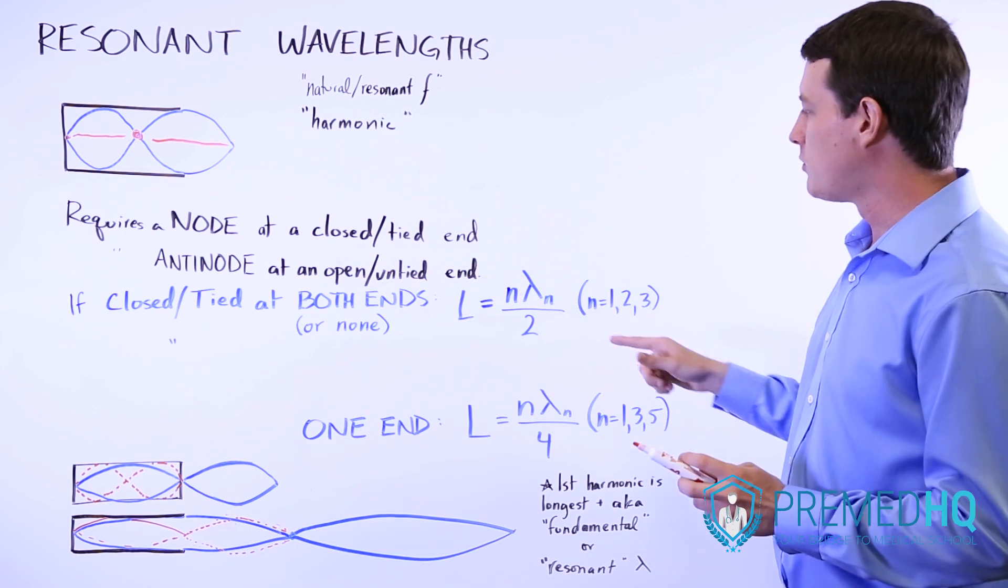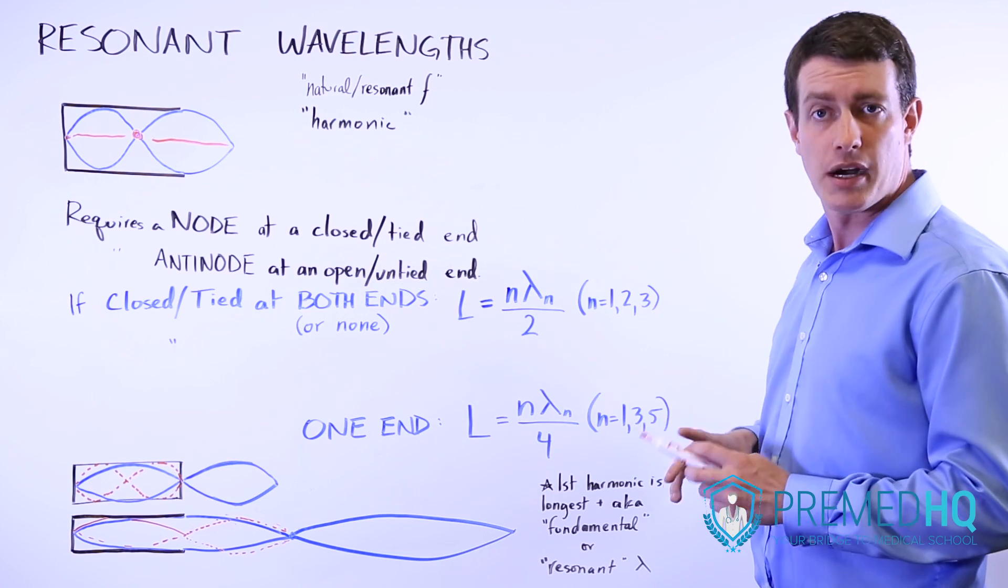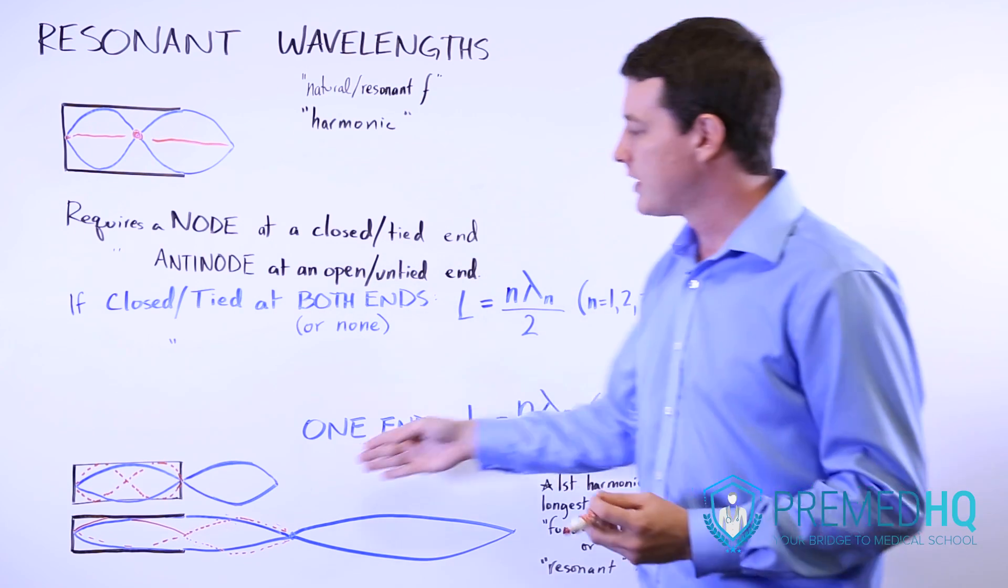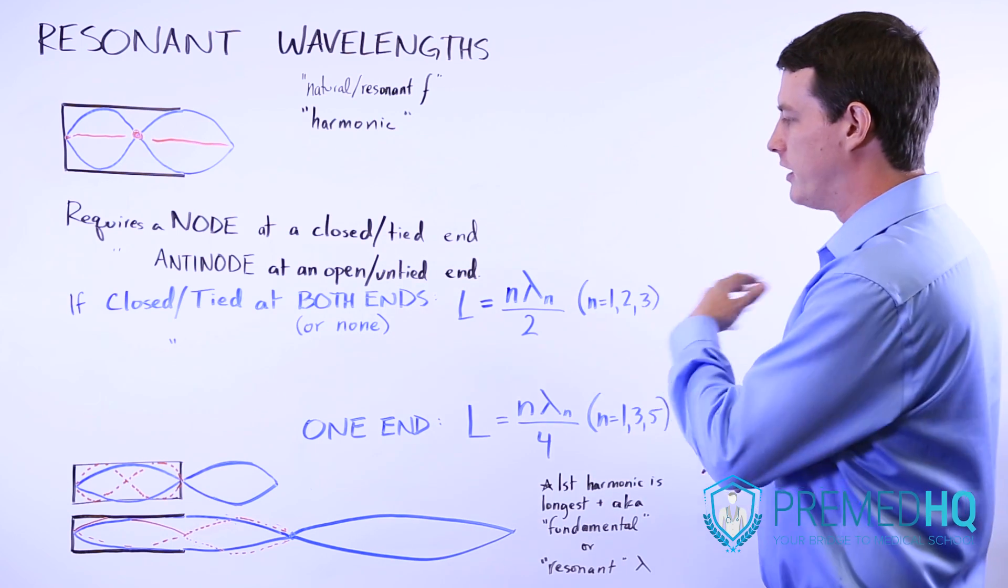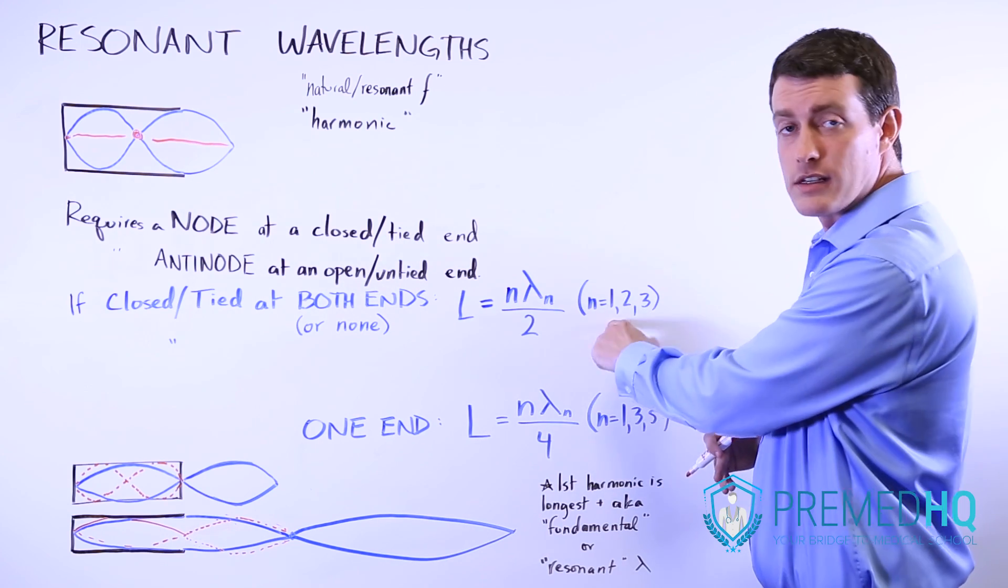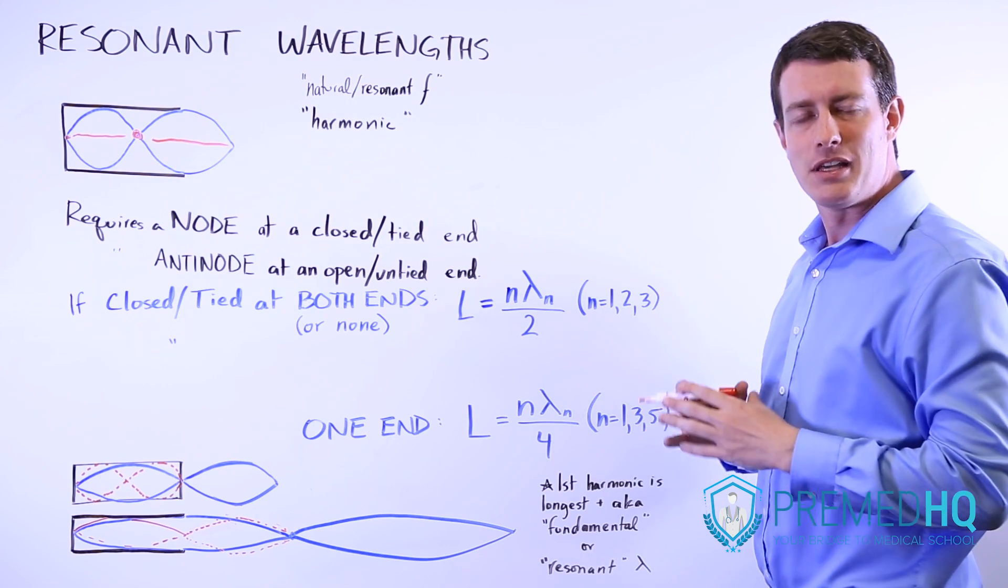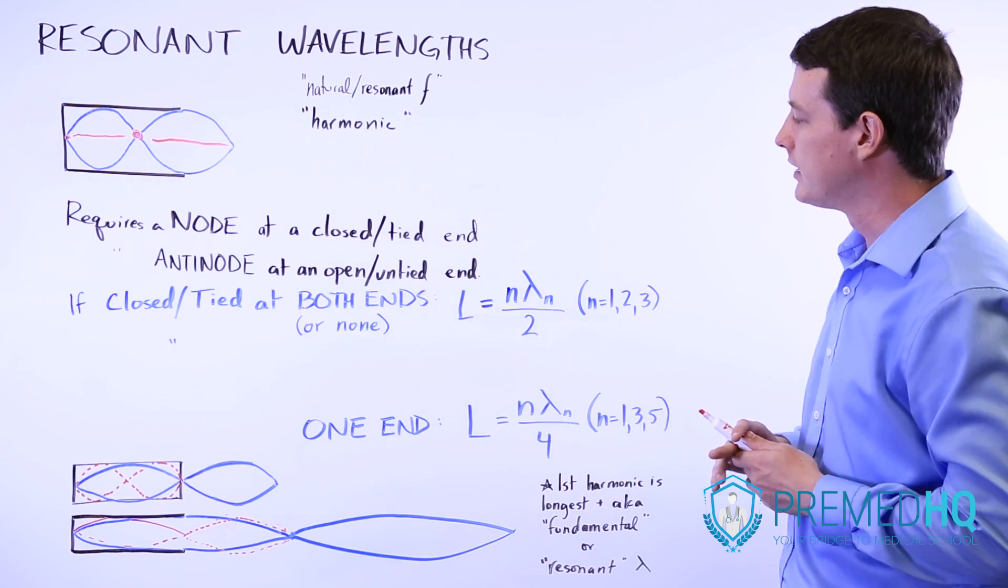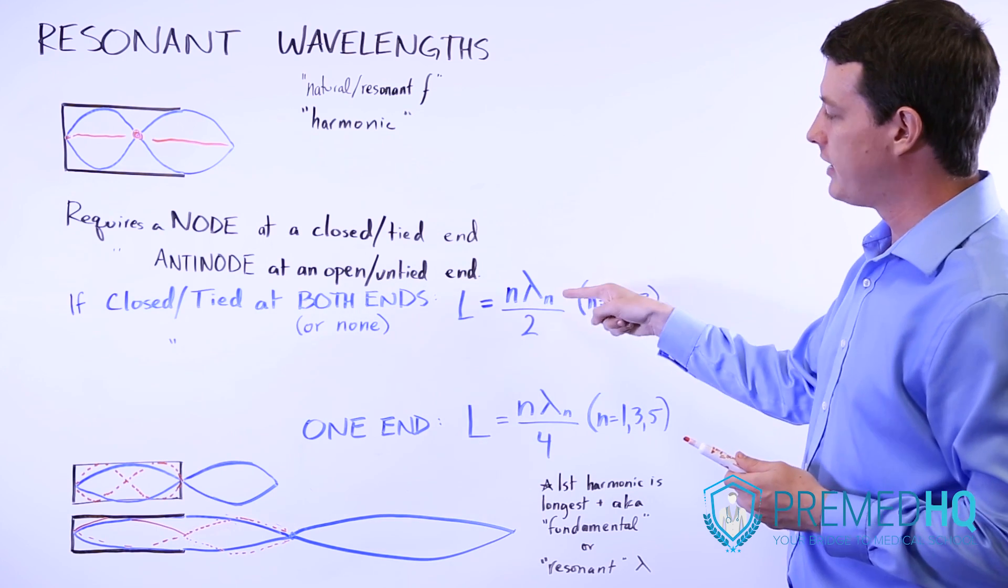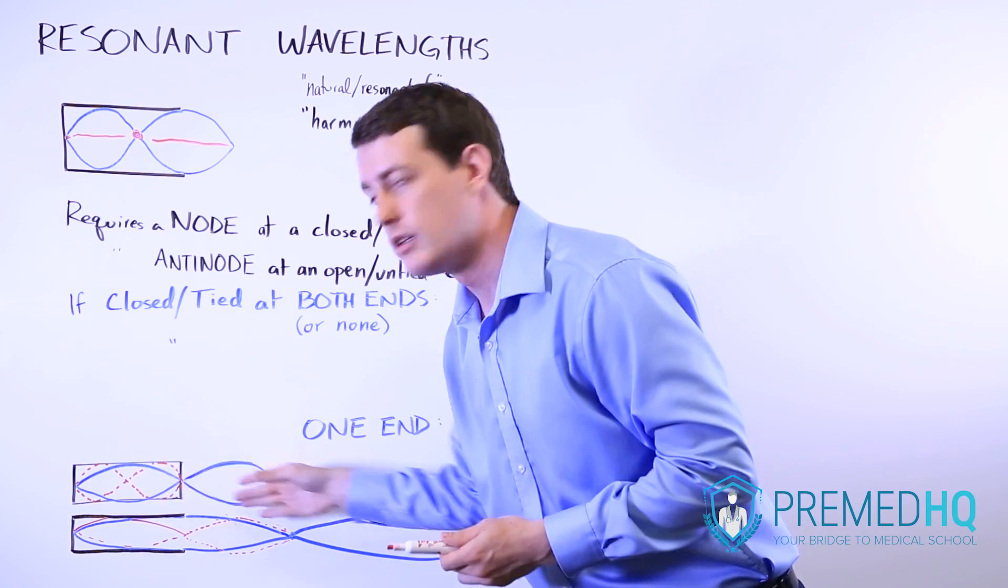So the fundamental one, which is going to be n times lambda sub n divided by 2, it's going to make sense that the fundamental one is twice as long as the chamber. And so if you were to use n is equal to 1, because it's the first harmonic, lambda sub n is going to be the length of the first harmonic, the wavelength of that harmonic. So if you multiply 1 by that wavelength and then divide it by 2, that will give you the length of the chamber.